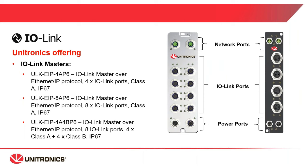Now we will cover our IO-Link hardware offering, starting with the main unit, the master. We have three types of masters. The basic one is the four IO-Link class A master. We also have two master types with eight IO-Link ports. The first is the 8A P6, which has eight class A ports — that's the most used model. The second is the 4A 4B P6, which has four class A ports and four class B ports. Please note that all our IO-Link hardware is IP67 approved.